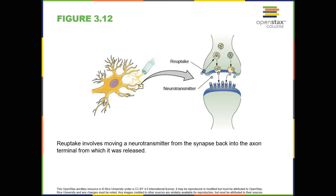Neuronal communication is often referred to as an electrochemical event. The movement of the action potential down the length of the axon is an electrical event, and the movement of the neurotransmitter across the synaptic space represents the chemical portion of the process.